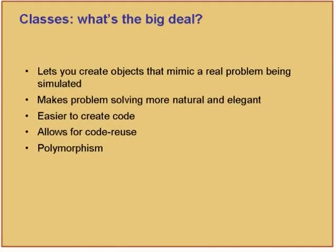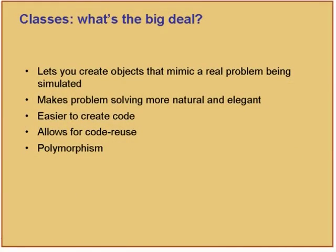The other thing about classes and object-oriented programming in general is that you need to think object-oriented — you have to change the way you think. It takes some getting used to when you write OO code. You have to resolve everything into objects that are interacting. Once you start doing it, it becomes a habit to the point that you start talking always in object-oriented form. But it is extremely powerful because it lets you create objects that mimic a real problem that is being simulated.